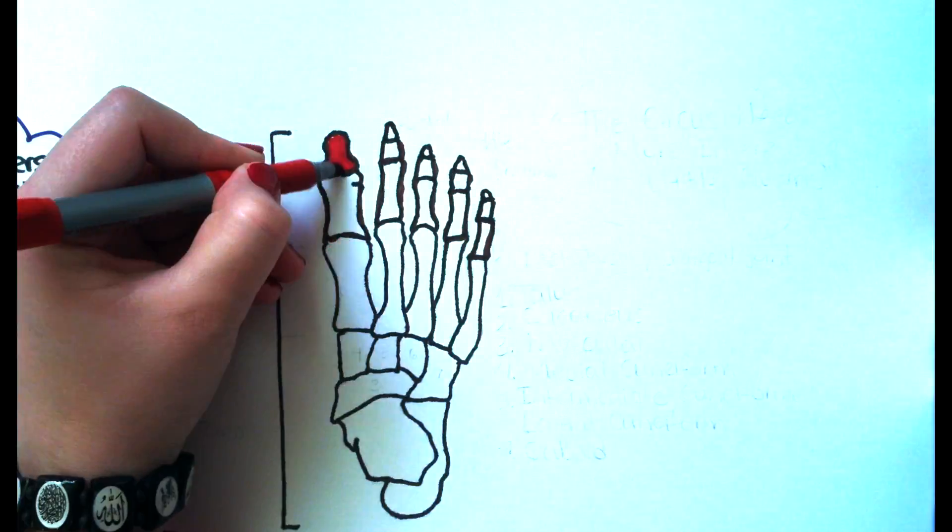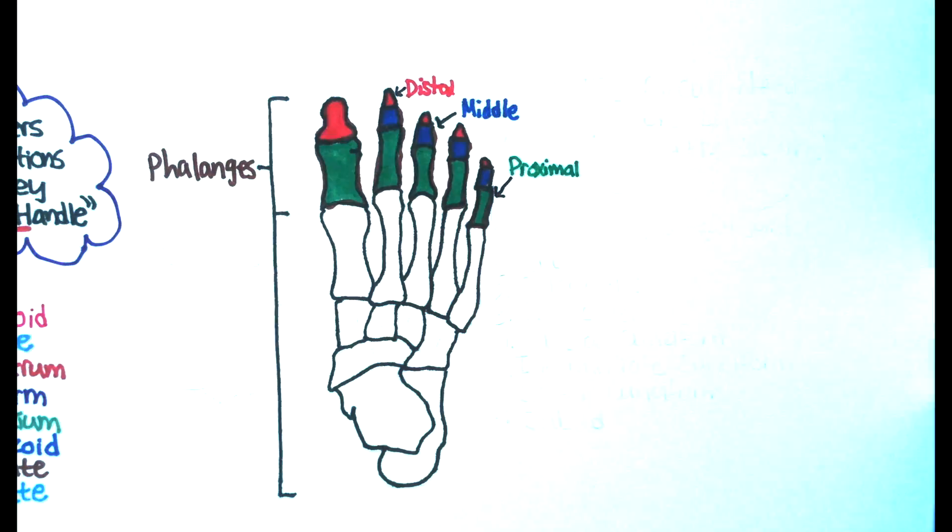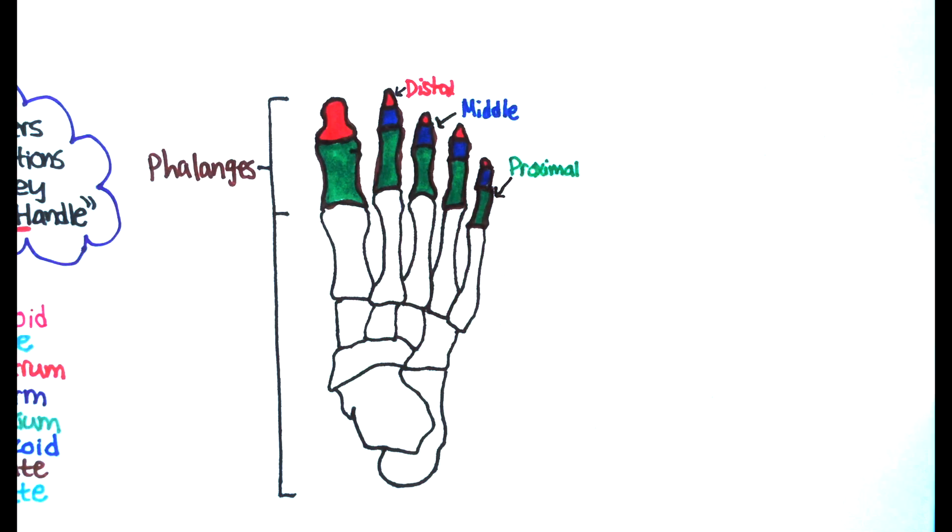First we're going to take a look at phalanges, the distal, middle, and proximal phalanges. And as you may notice, the big toe only has distal and proximal.